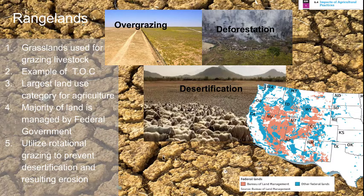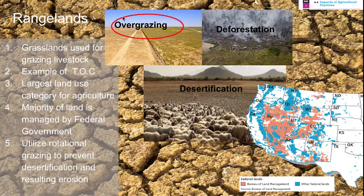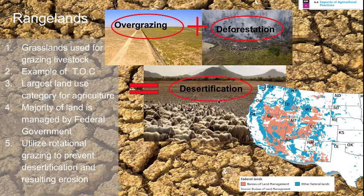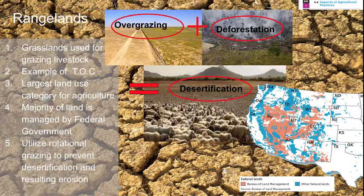The Bureau of Land Management deals with managing rangelands. Methods for sustainability include rotational grazing, preventing desertification, and reducing soil erosion. Without management, we'd get severe overgrazing — visible on the left side of the fence line compared to the right. When overgrazing and deforestation combine, they can lead to desertification, which depletes the soil of all its essential nutrients and fertility, essentially making it dead. Managing overgrazing and deforestation are key to avoiding desertification.